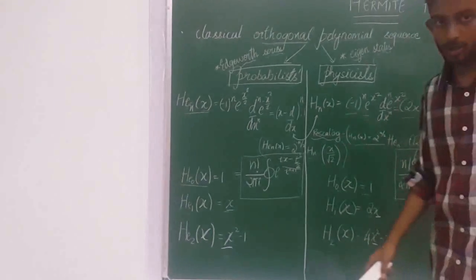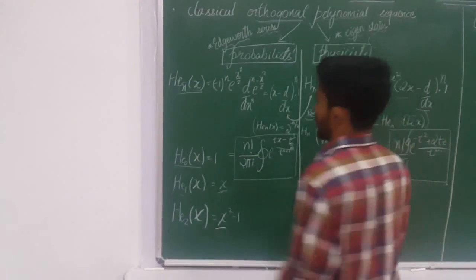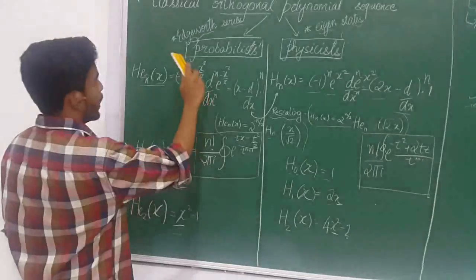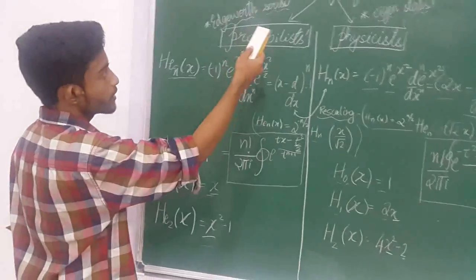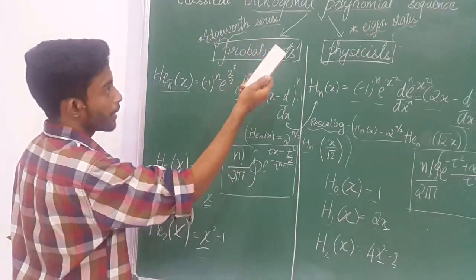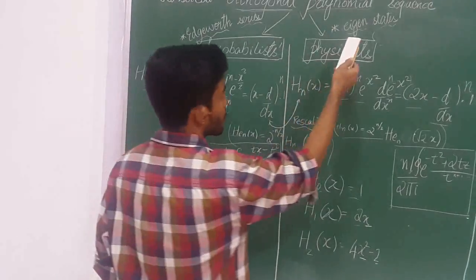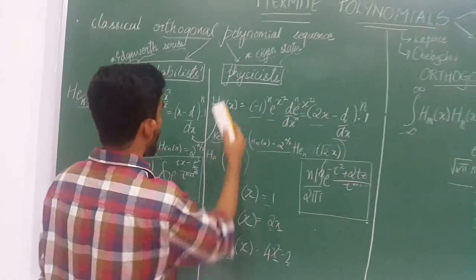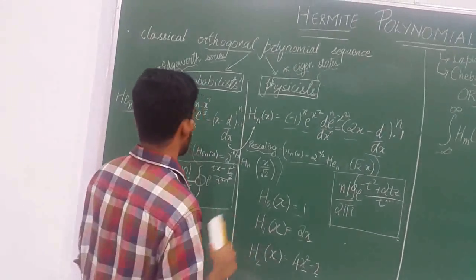Let us see the application of Hermite polynomials. Hermite polynomials in AdWords series are known as probabilistic Hermite polynomials, and Hermite polynomials in Eigen states are known as physicist Hermite polynomials.